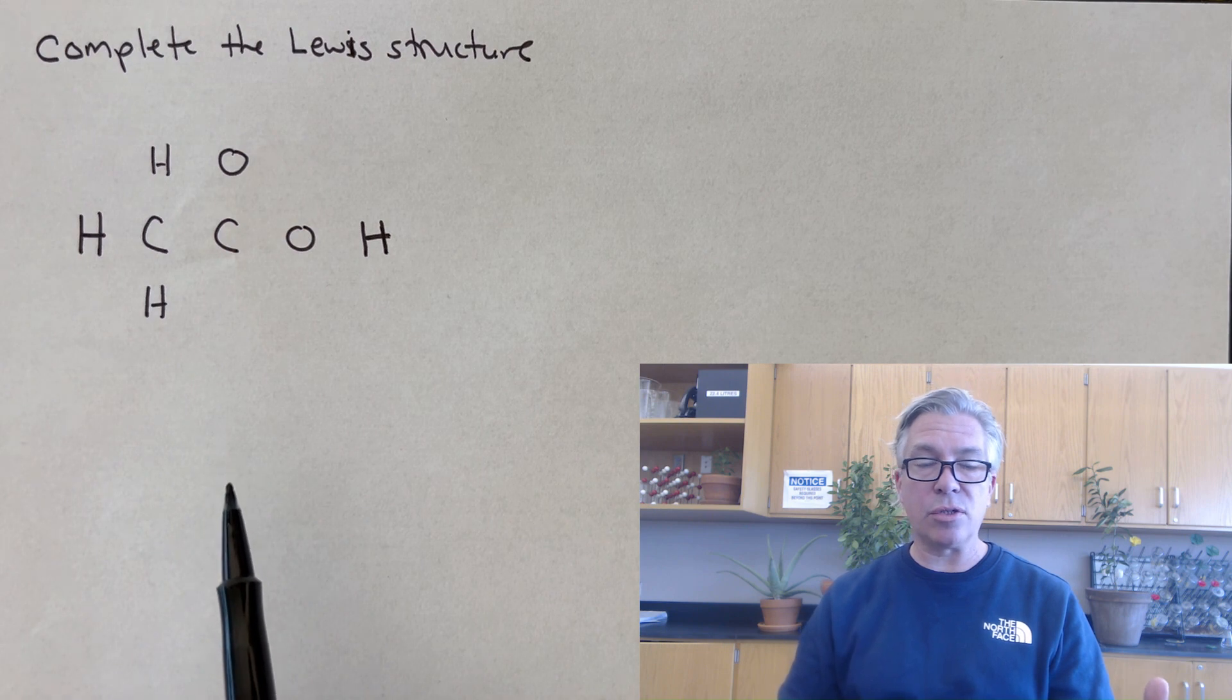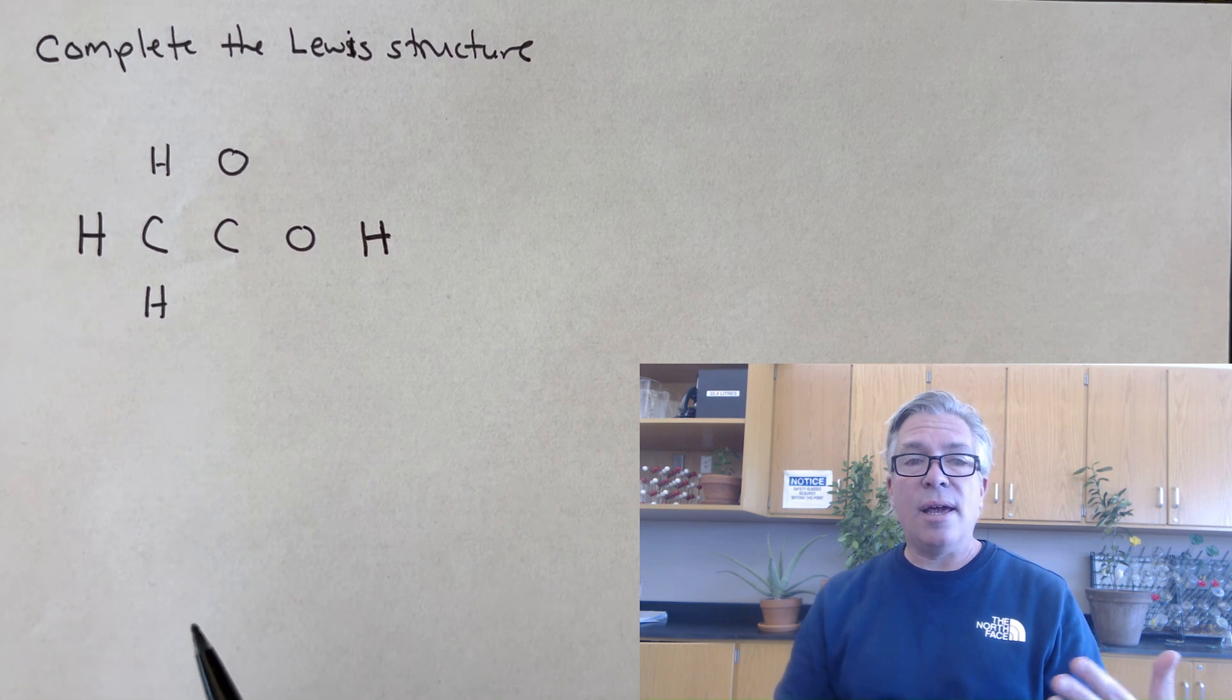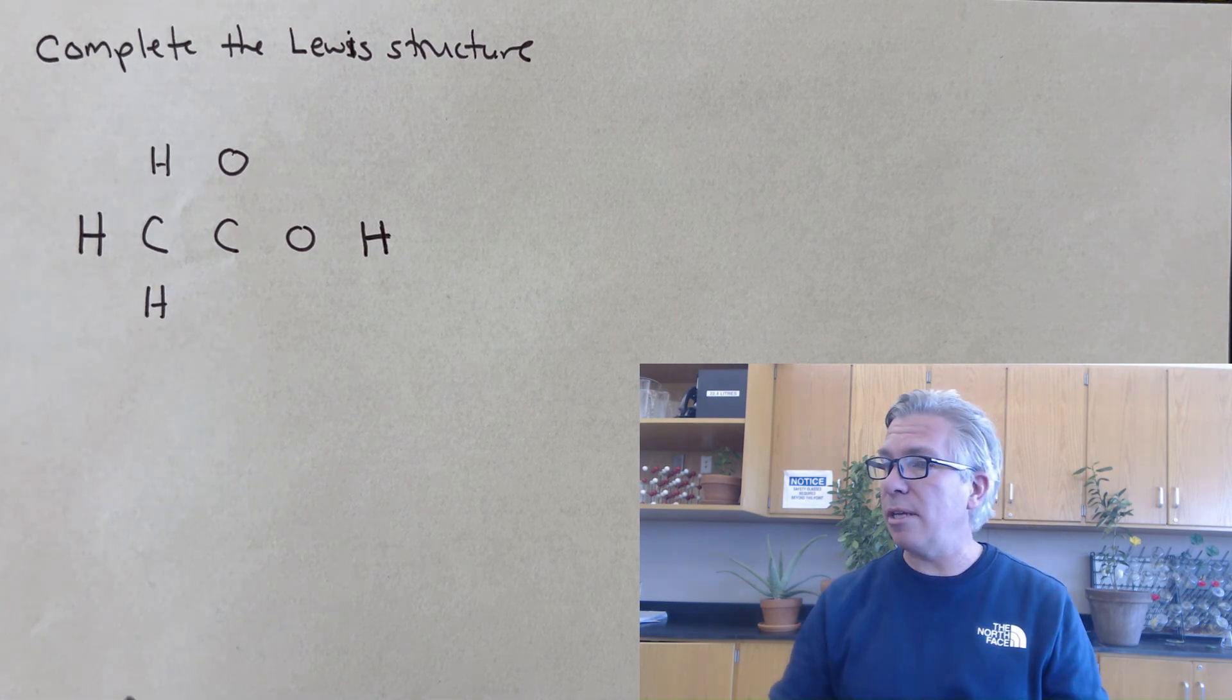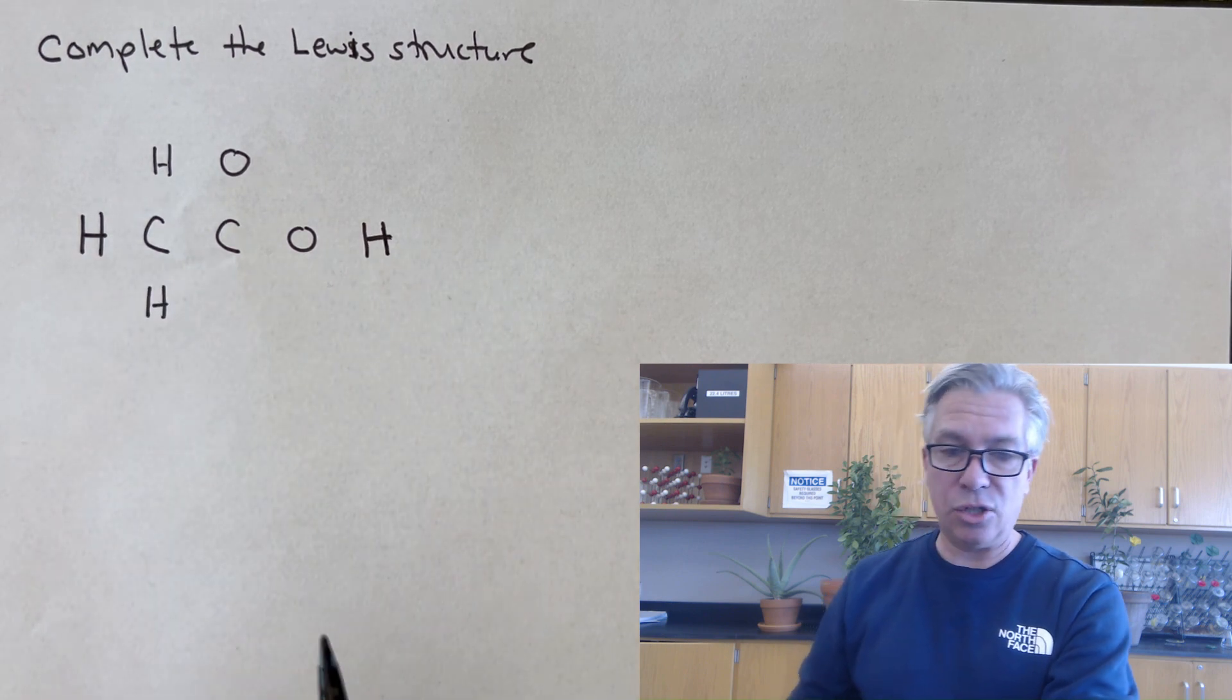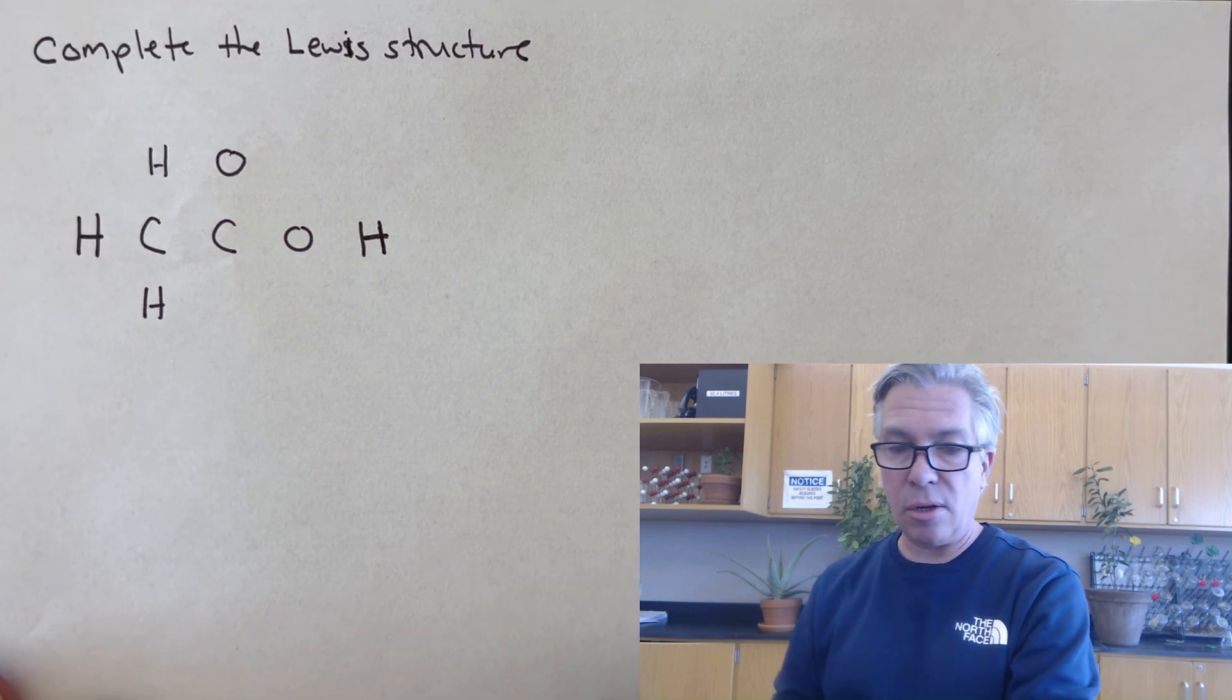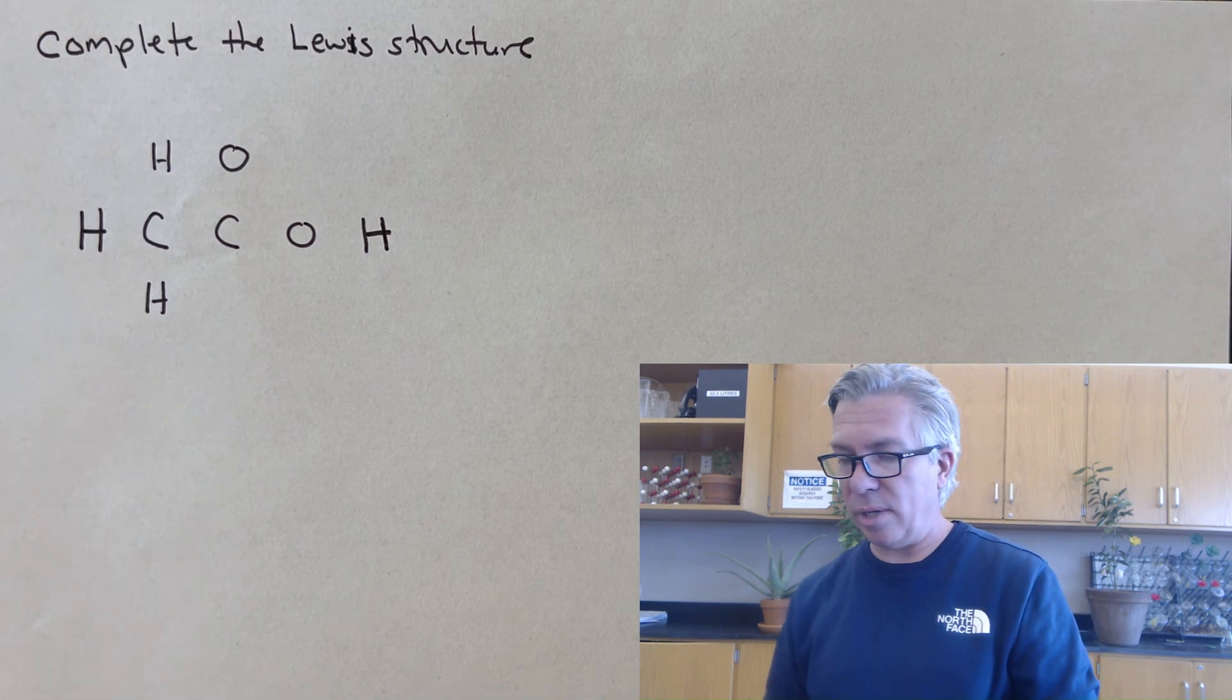So you might recall that Lewis structures are diagrams of molecules that show which atoms are attached to which and how many valence electrons each one has and what's the arrangement of those electrons. And so here's a typical one that I've seen recently and it involves four hydrogens, a couple of carbons, couple oxygens, and it says complete the Lewis structure. So no bonds are shown, no lone pairs are shown, but we can kind of make sense of it all if we think about a couple of quick things.